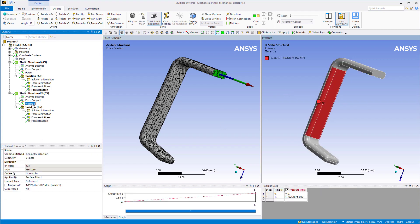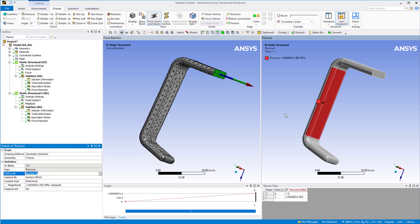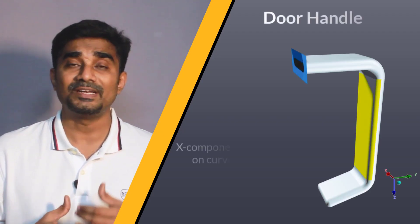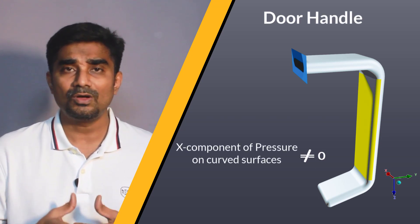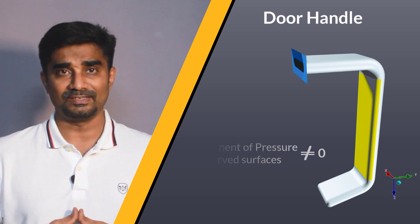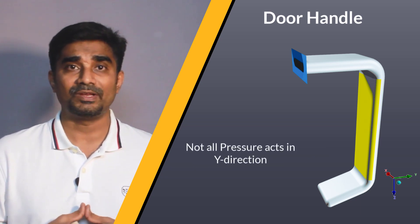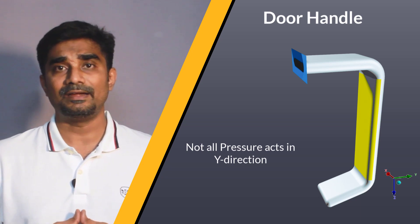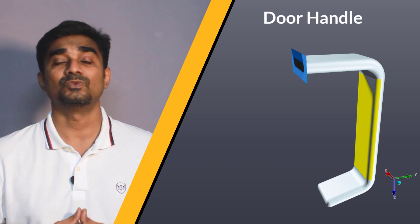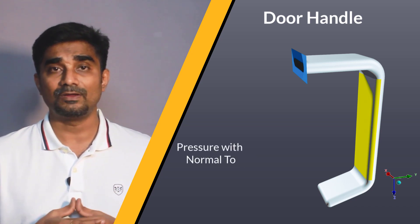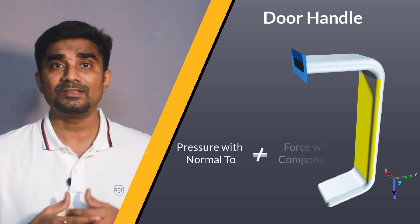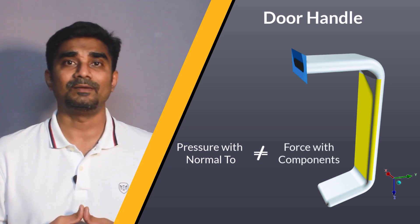Why does this happen? If we look at the pressure boundary condition carefully, we see that we have set the defined by to normal to, meaning the pressure acts normal to the scoped surface. Notice that two of the scoped surfaces are curved, meaning that the pressure applied on these two surfaces has a non-zero component in the global X direction. Thus, when we use the pressure boundary condition, not all of the pressure applied acts in the global Y direction. So when we use the pressure boundary condition with the current option of defined by normal to, it is not equivalent to a force boundary condition defined by components.